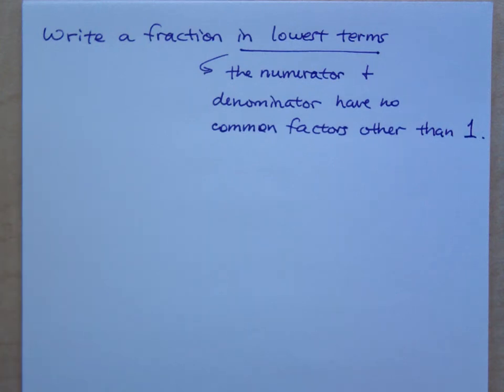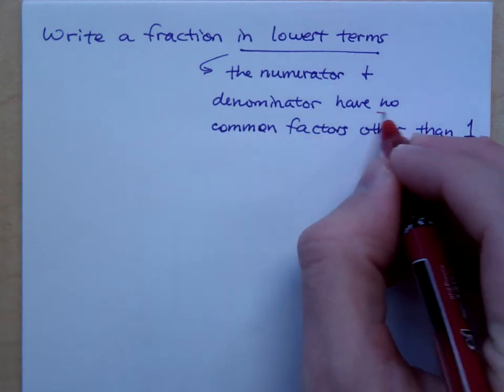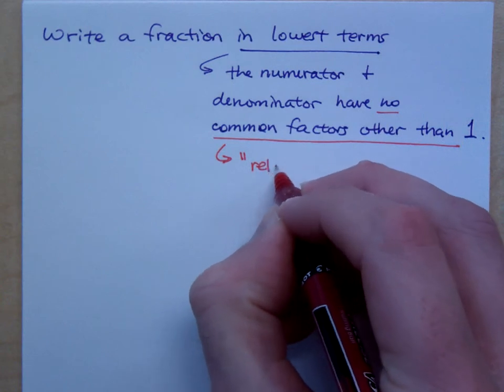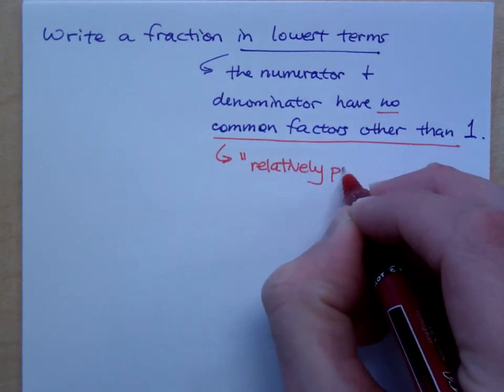Here's a fun little higher math phrase for you. To have no common factors other than 1 is what we call relatively prime.